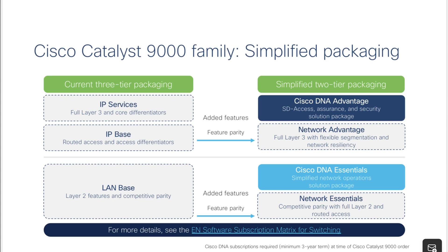Before we start, you may or may not be familiar with how Cisco licensing worked previously. More or less they had a LAN base, which was a layer 2 switch, and then the layer 3 versions called IP Base and IP Services. The difference between these was that IP Services included BGP, MPLS, and such things, while IP Base had more basic routing protocols like OSPF. This varied between switches.